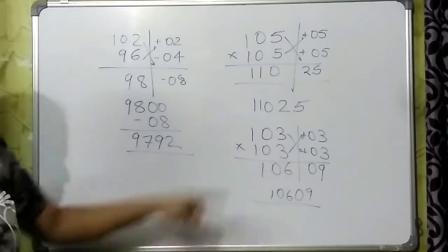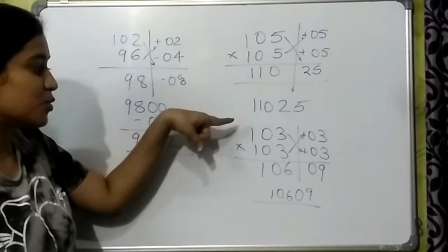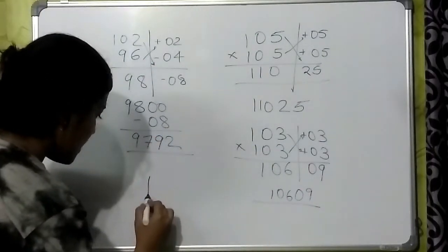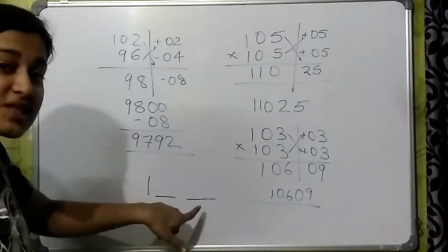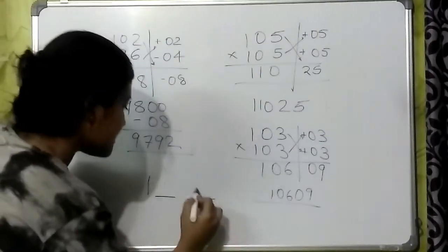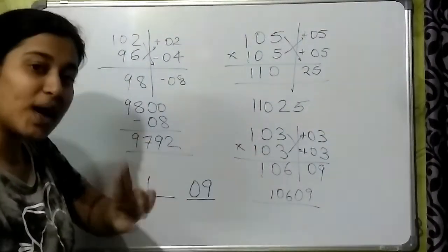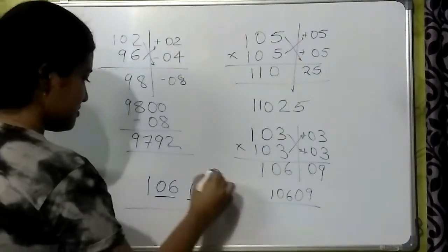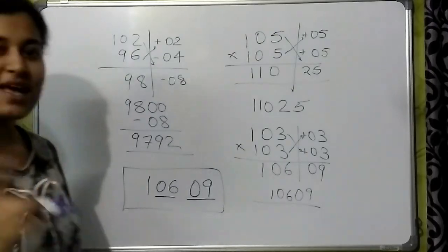Hence from here we can conclude that the square of numbers which are very close to 100 like 101, 102, 103 can be written as 1, leaving these two places. This can be filled with the square of the first number like 3 squared is 09, and this place can be filled with twice the number like 06. Makes it very easy to solve squares of the number. Thank you.